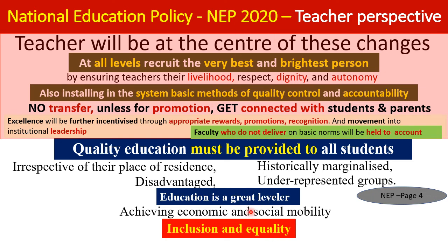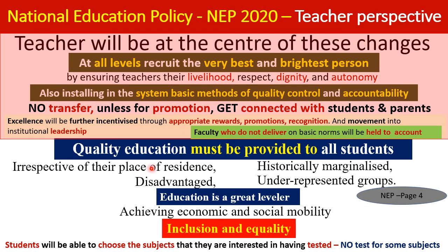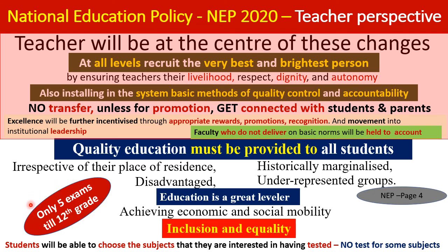Students have the advantage of choosing which subjects to take for examinations — they can exclude some studied subjects from examinations. In the first 15 years of schooling, there are only five examinations: at grades 3, 5, 8, 10, and 12. Students are not burdened with annual examinations every year.